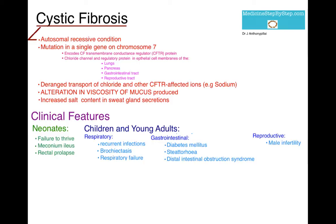In children and young adults, there will be a range of problems. Because the epithelial cell membranes at the lungs are affected, patients suffer recurrent respiratory infections. The airways become damaged by the inflammatory responses and there is progressive bronchiectasis and eventually respiratory failure.